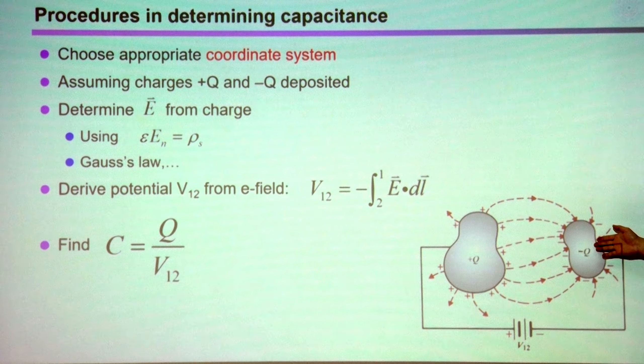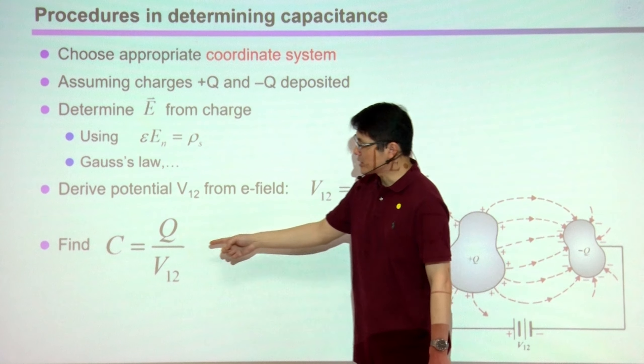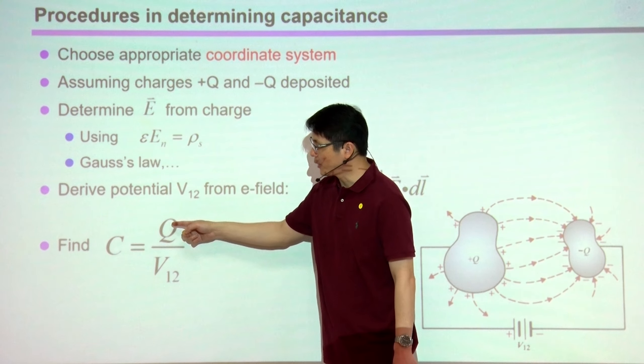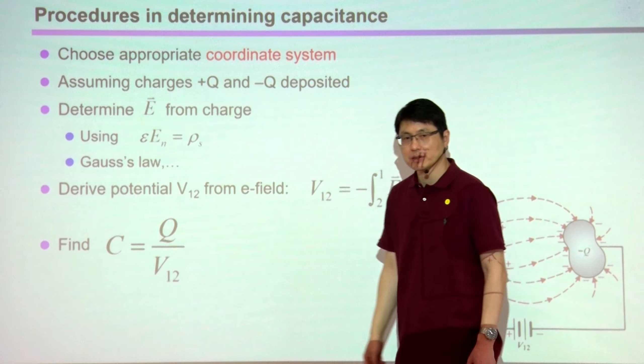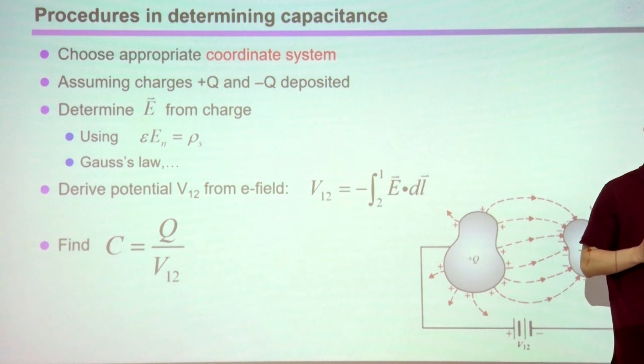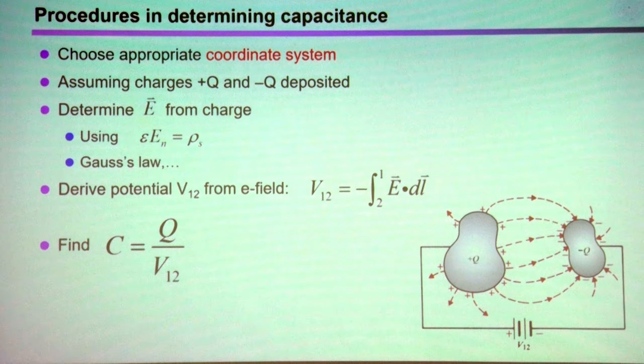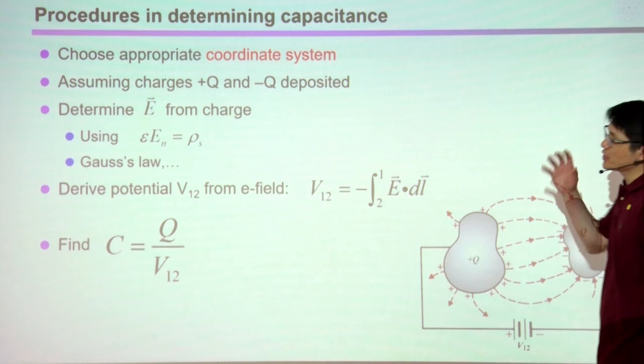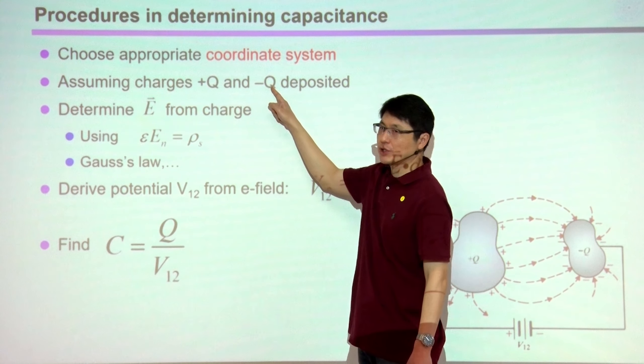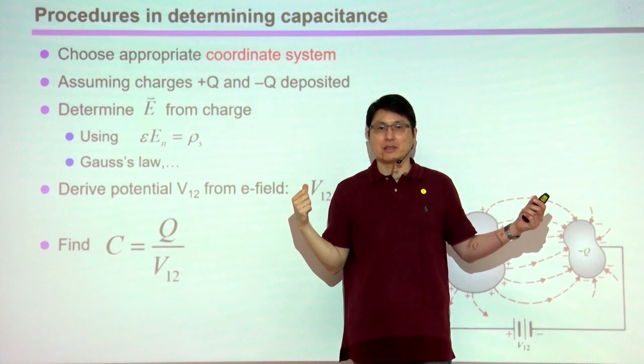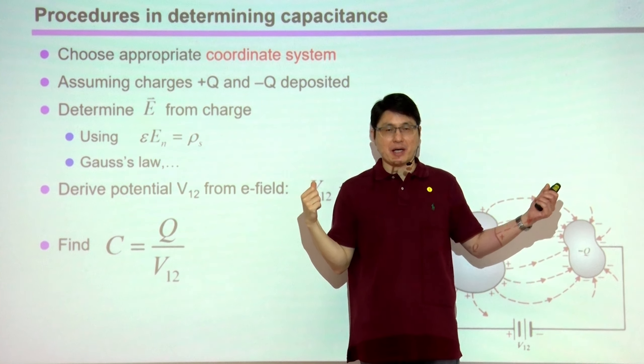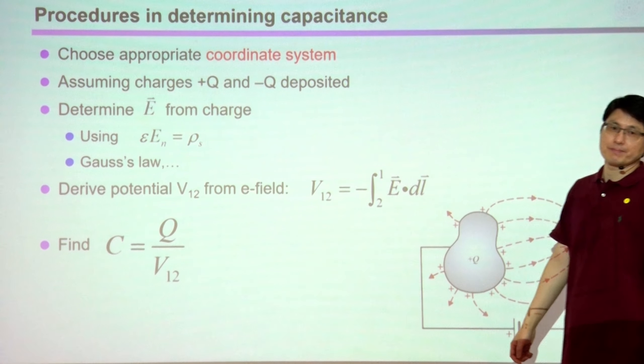Once we have this potential difference, we can just put it in the denominator and put Q in the numerator and therefore we have the derived capacitance. The procedure is to assume charge Q and negative Q being deposited over the two ends, then you calculate the E field, you calculate the potential difference, and then you take the ratio of the charge and the potential difference.